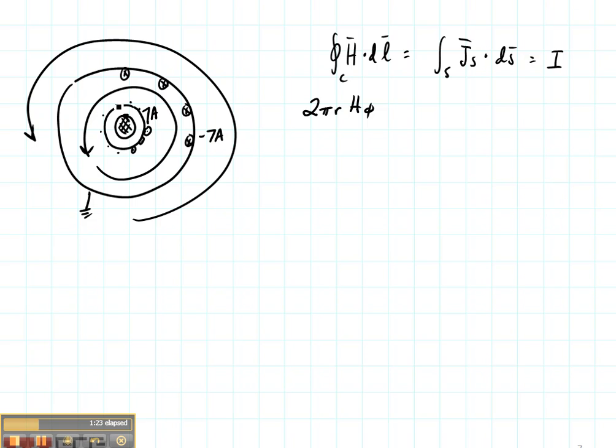All of the current is here on the outside of my inner conductor. So I haven't picked up any current at all. So inside the inner conductor, I is equal to 0 and therefore H Phi is also equal to 0.